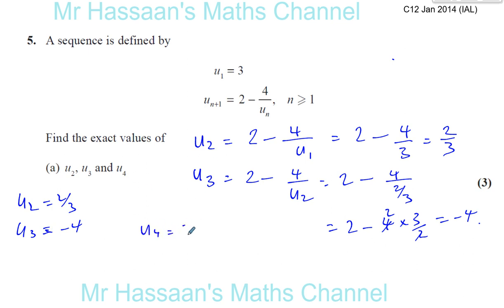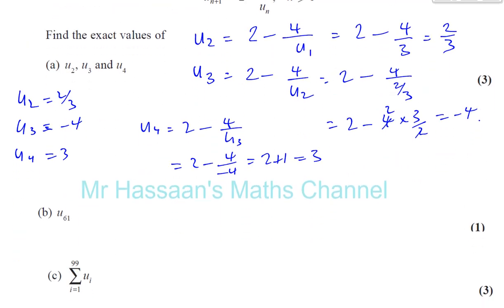The fourth term is 2 minus 4 over the third term, which is 2 minus 4 over negative 4, which is 2 plus 1, which is 3. So the fourth term is 3, so I think we can notice something here, that the next term is going to be, the fifth term is going to be 2 thirds, and the sixth term is going to be negative 4, and so on. So it's going to continue in this particular way.